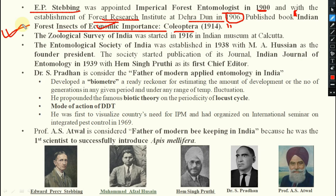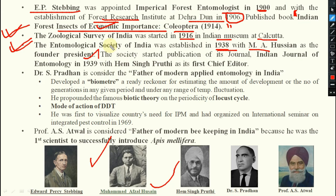The Geological Survey of India entomological section was started in 1916 at the Indian Museum at Kolkata. The Entomological Society of India was established in 1938 — very very important — with Mohammad Abzal Hussain as its founder president. The society started publication of its journal, the Indian Journal of Entomology, in 1939, with HS Pruthi as its first chief editor.